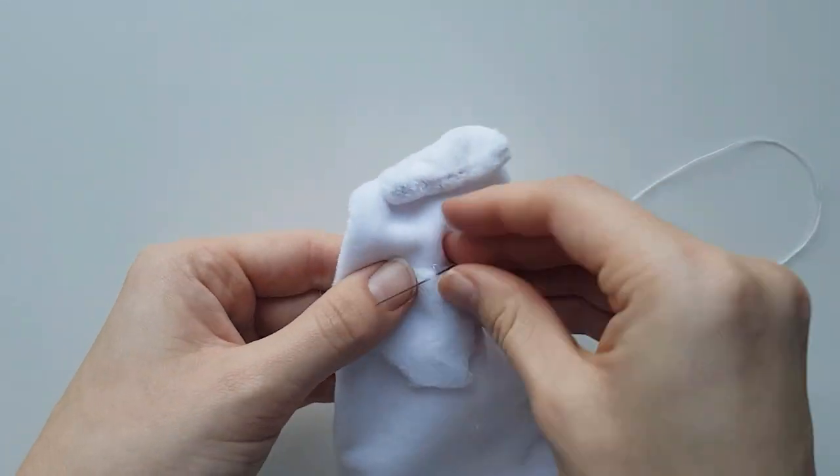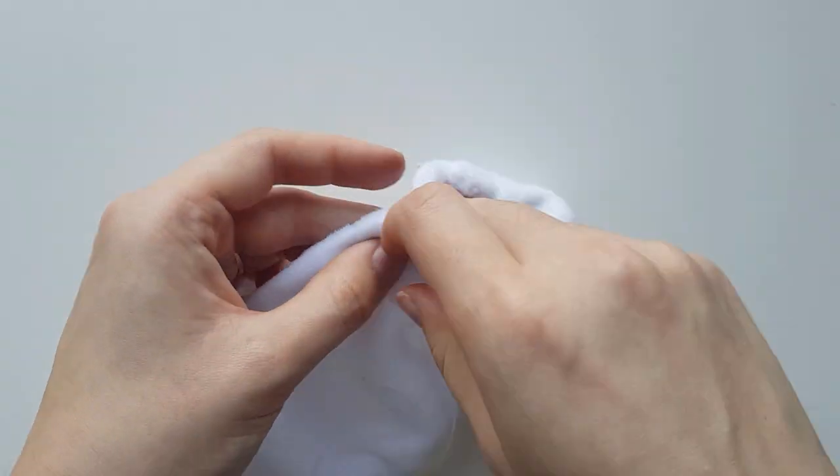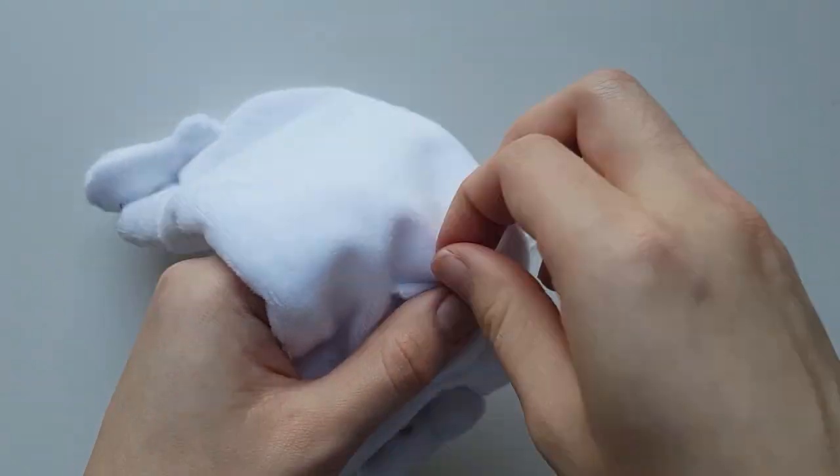Fold in the seam allowance of each pocket and join them on using the same method on each side of the coat, leaving the top edge with no seam open, a great place to store knives.